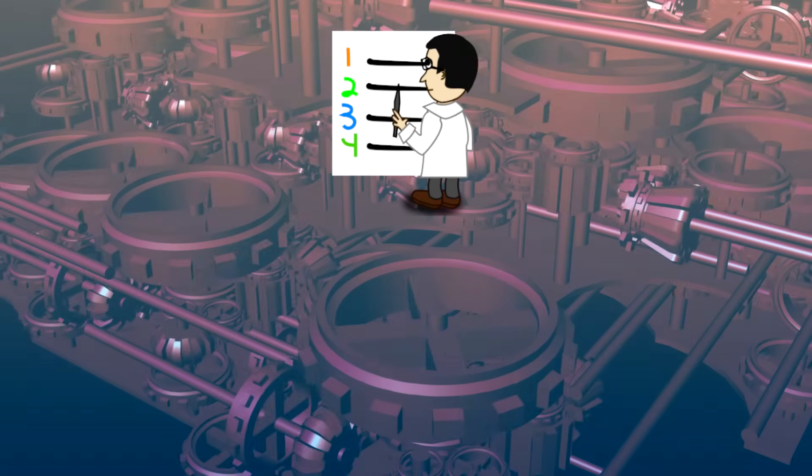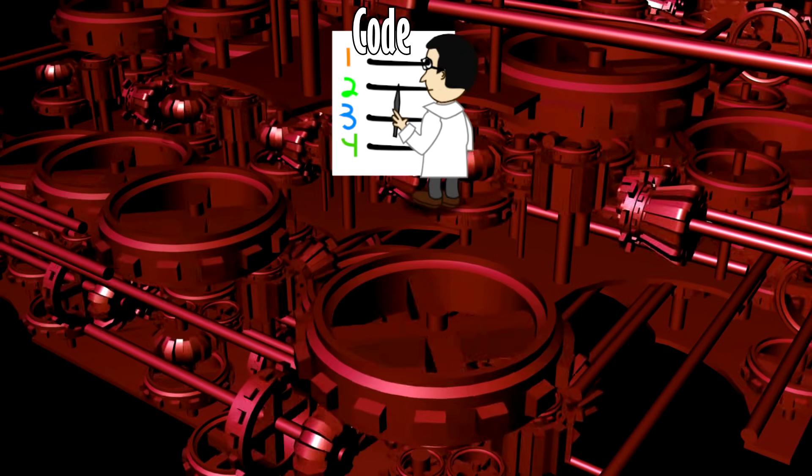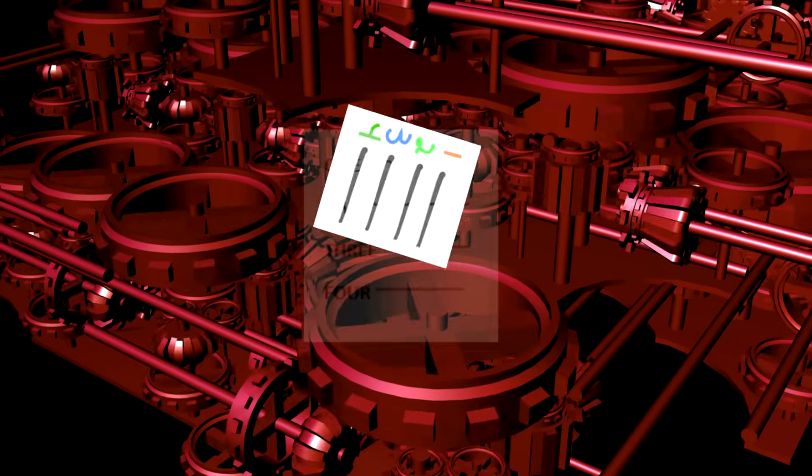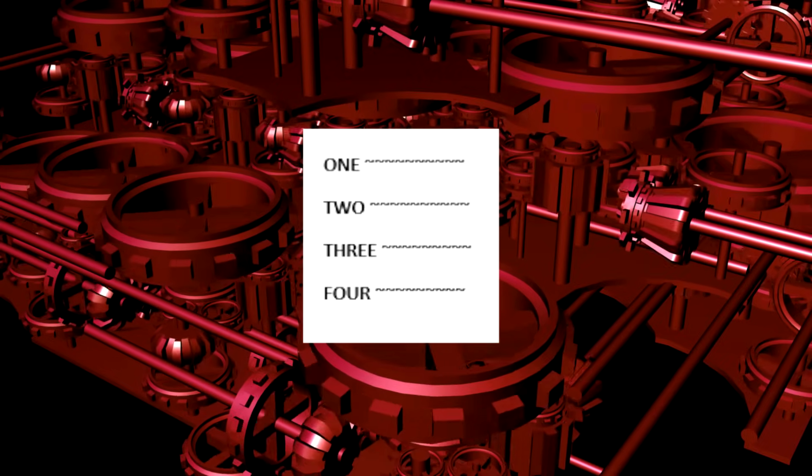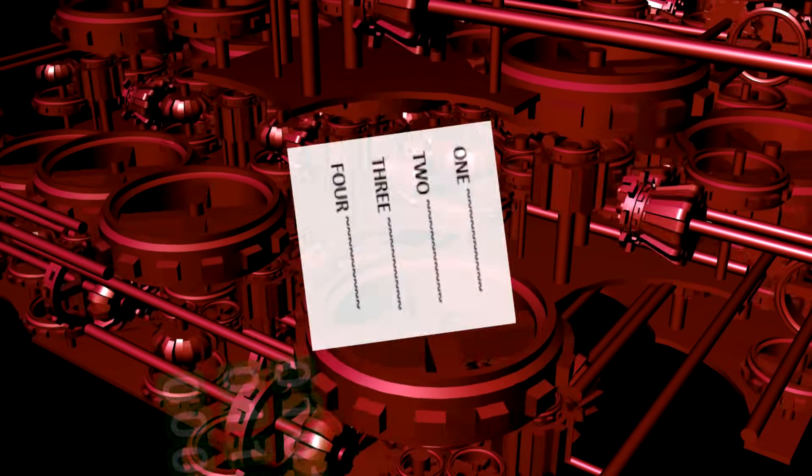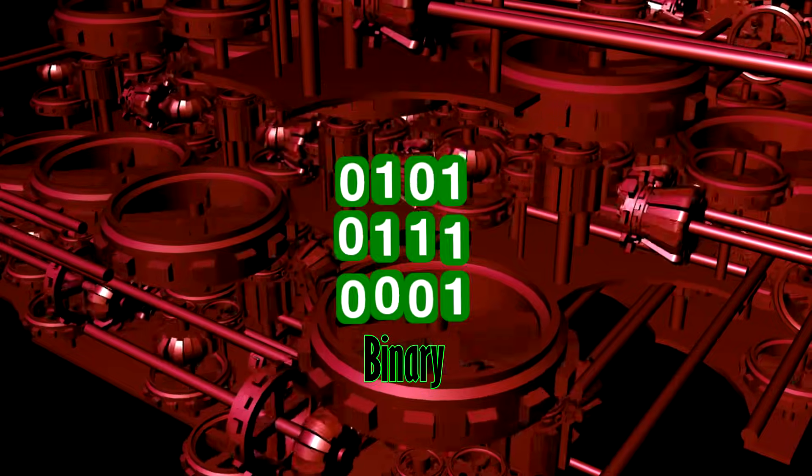And the process goes like this. On the top level, you have a human writing code for a specific computer language. And after this, the code is translated, or compiled, into a low-level language by a tool called a compiler. And finally, the code is translated into binary, or machine language, by an assembler.